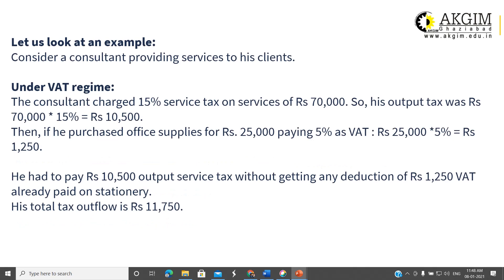Let's see an example of how tax is calculated under the VAT regime and what the cascading effect looks like. A consultant charges 15% service tax on consultancy services of Rs. 70,000. He will charge 15% service tax, so his output tax is 70,000 × 15% = Rs. 10,500. He also purchased office supplies for Rs. 25,000 paying 5% VAT, so VAT paid is Rs. 1,250.